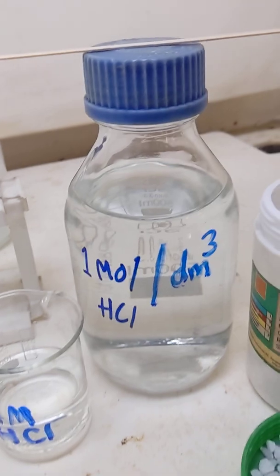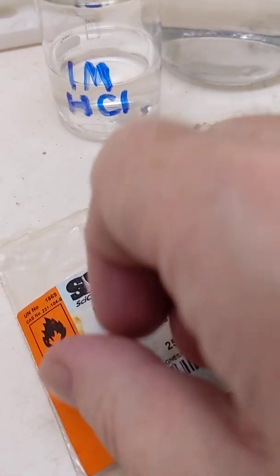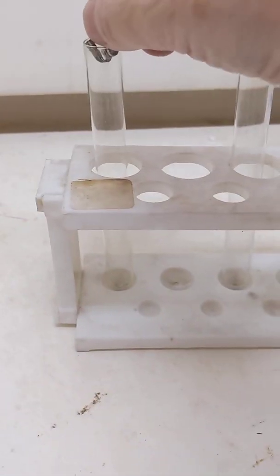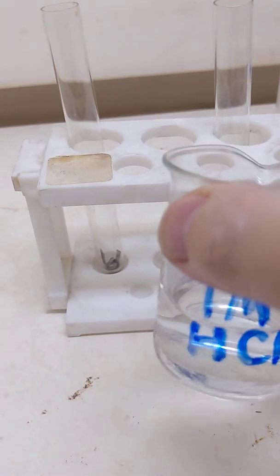The second reaction of the hydrochloric acid we're looking at is the reaction with a metal. We've got some magnesium here, and if we place it in the test tube we can then add some hydrochloric acid.